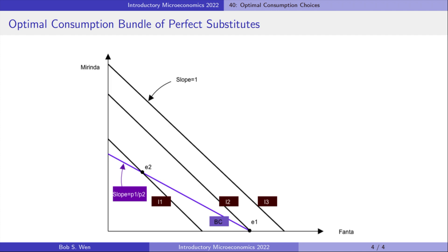We can also interpret her optimal choice from the marginal utility of the last dollar spent. Because we assume that Fanta is less expensive than Marinda, the last dollar can purchase more Fanta than Marinda.